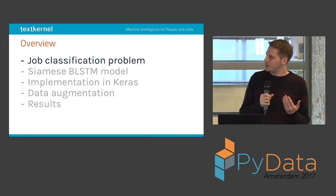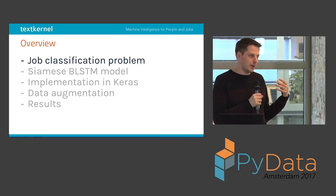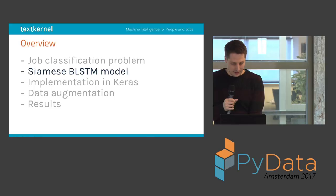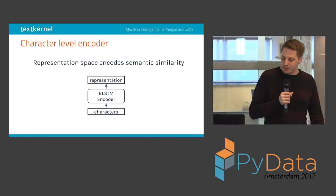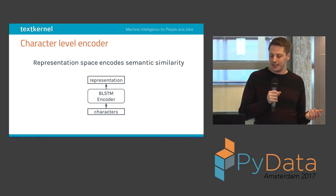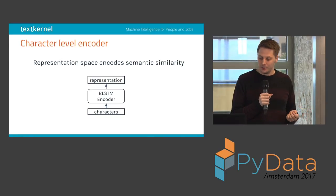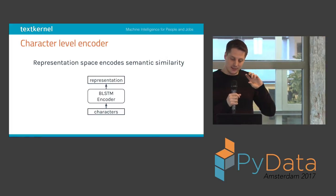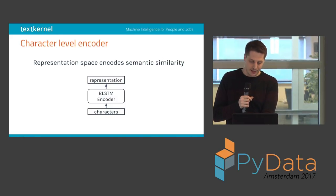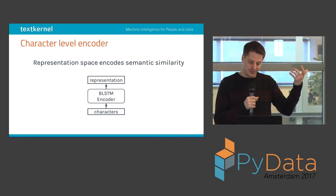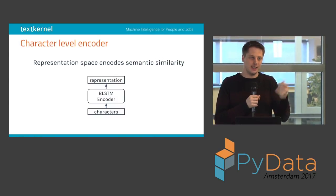That's the problem we're trying to solve. I'll explain the model — the Siamese BLSTM model — and then we'll go to how we implemented that in Keras. This Siamese BLSTM model is trying to learn a character-level encoder: a recurrent neural network over the characters in the string. In the end, we want a representation with the semantic similarity we're looking for. This RNN model will output at the end some vector, and the space of those vectors should be the space that I showed.